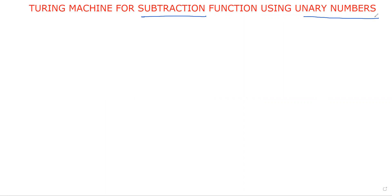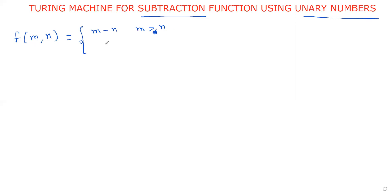The subtraction function is defined as follows: for two numbers m and n, f(m, n) equals m minus n if m is greater than n, and equals zero if m is less than or equal to n. This is the subtraction function.